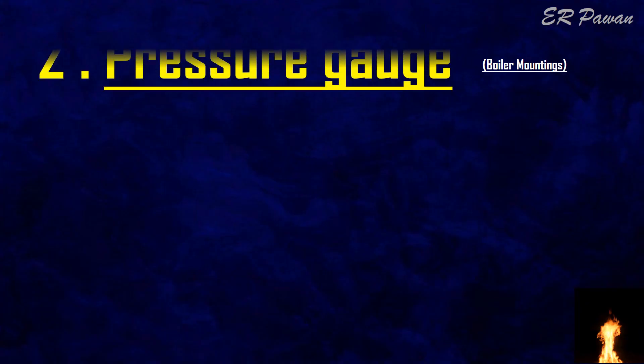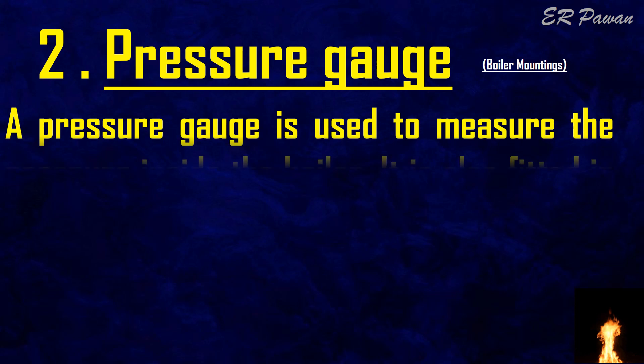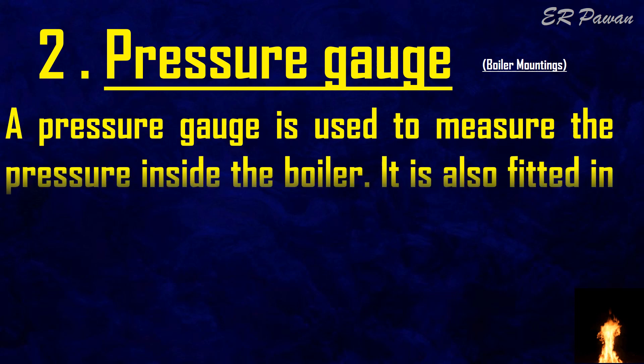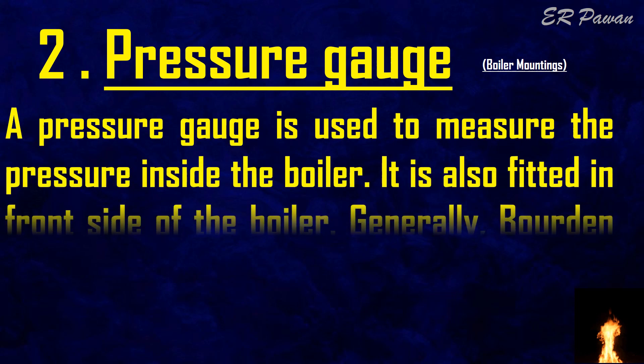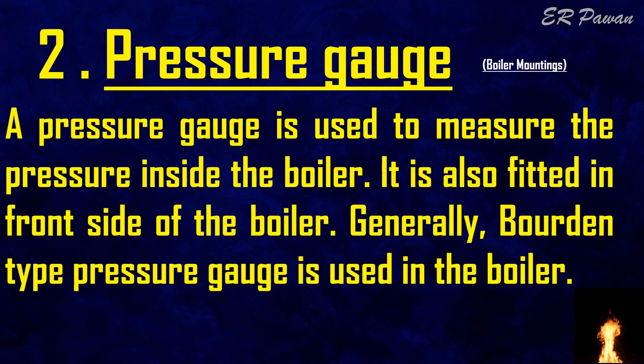Pressure gauge. A pressure gauge is used to measure the pressure inside the boiler. It is also fitted on the front side of the boiler. Generally, a Bourdon-type pressure gauge is used in the boiler.